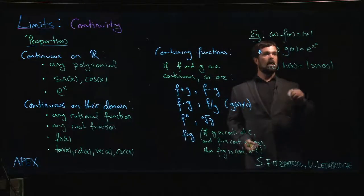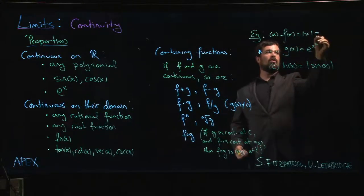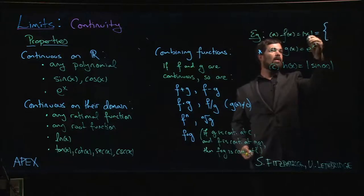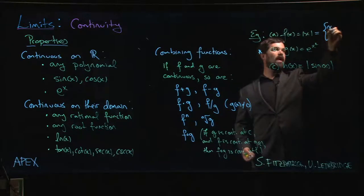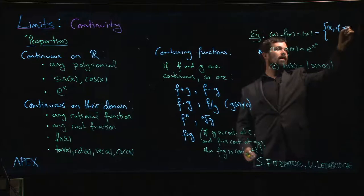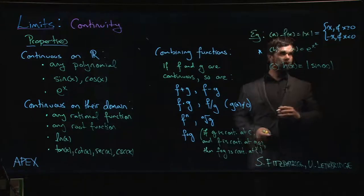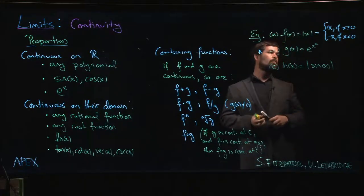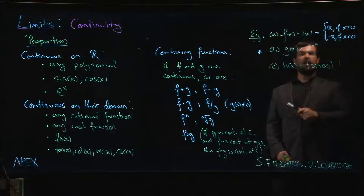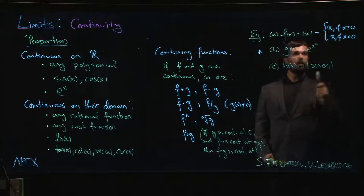What about the absolute value function? Remember that the absolute value function is given by x if x is greater than or equal to zero, and minus x if x is less than zero. So for every negative x value, I know that the absolute value function is continuous because it's given by a polynomial at any negative x value.